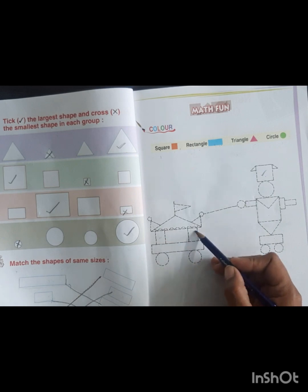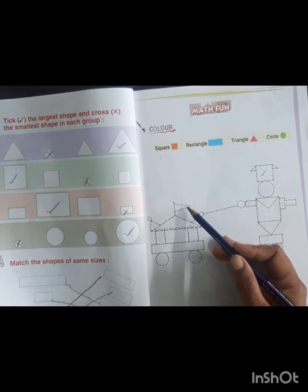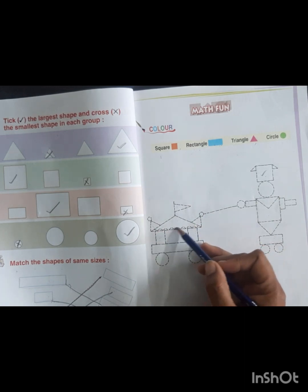Rectangle has blue color, so there are so many rectangles - one, two, three, four, five, six, seven. So we will fill blue color in these rectangles. Triangle has pink color, so search triangles in the picture. There are so many triangles, so fill pink color in these triangles.